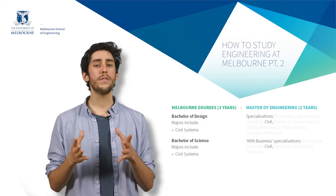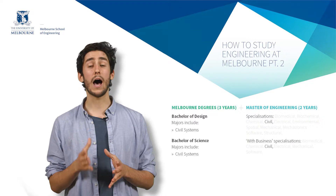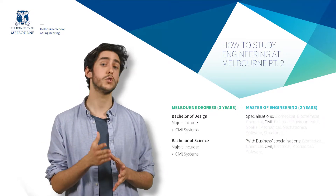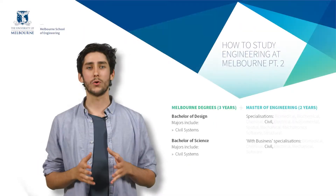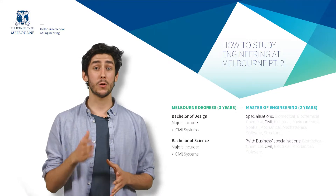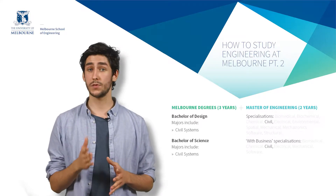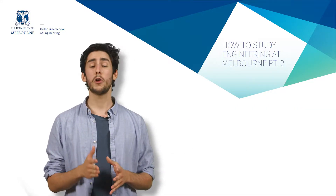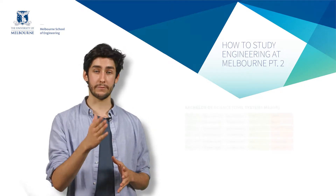Along with your major you'll also be studying other core subjects relevant to your particular bachelor degree. Let's take a look at how a Bachelor of Science with a major in civil systems would look like, followed by a Master of Engineering Civil.